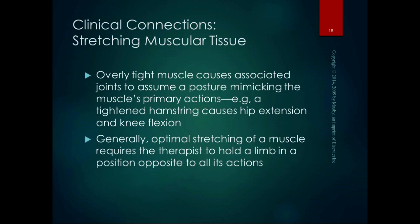More often in the clinic, you see tightened hip flexors, and tightened knee flexors, so you'll see people who walk around in hip and knee flexion. Just for fun, get up and walk around — if you walk with your hips and knees flexed, it takes a lot of energy, a lot of effort, and you tire out a lot faster. Generally in PT, optimal stretching of a muscle requires the therapist to hold a limb in a position opposite to all its actions. That's a bit like what we were talking about with passive insufficiency. If you're trying to stretch your hamstrings, you have to have your hip flexed and your knee extended — if your knee is flexed as well, you're not going to get much of a hamstring stretch.